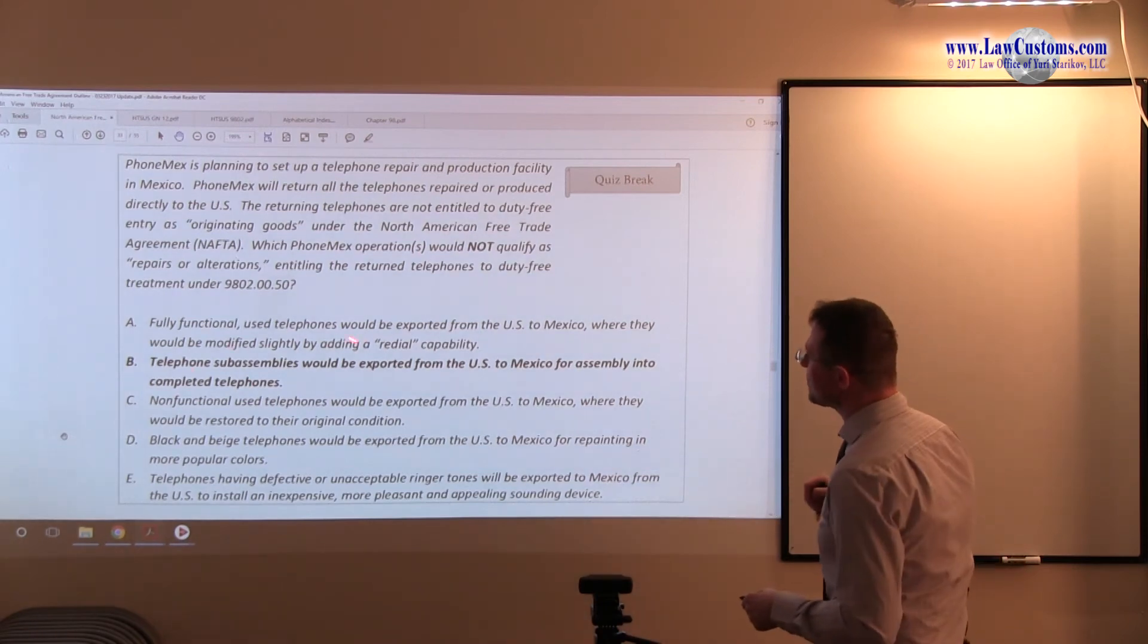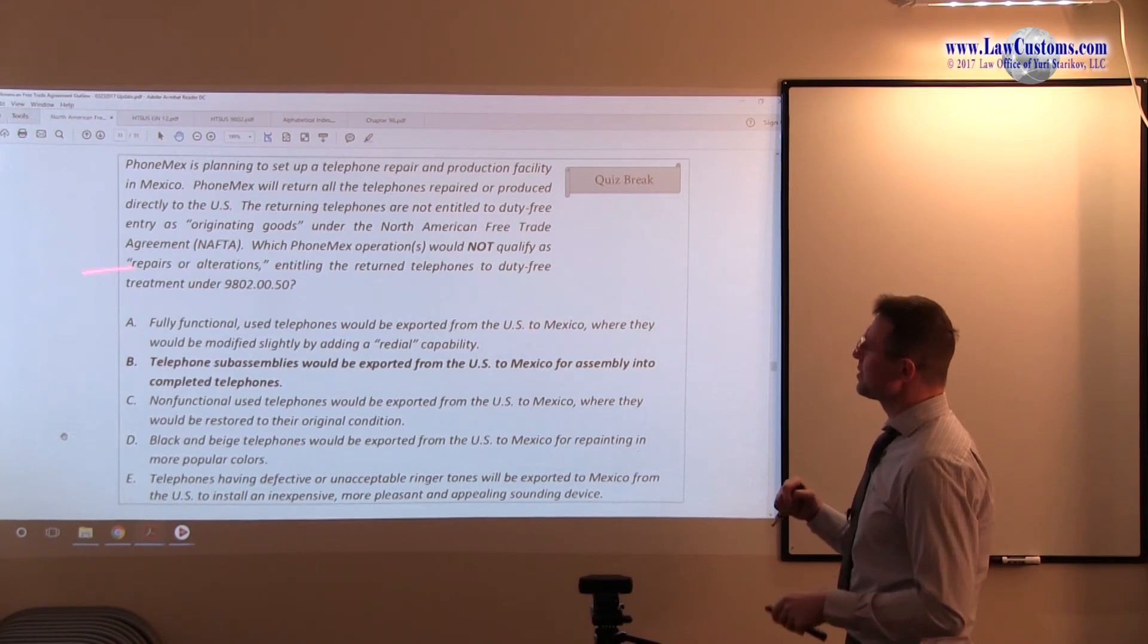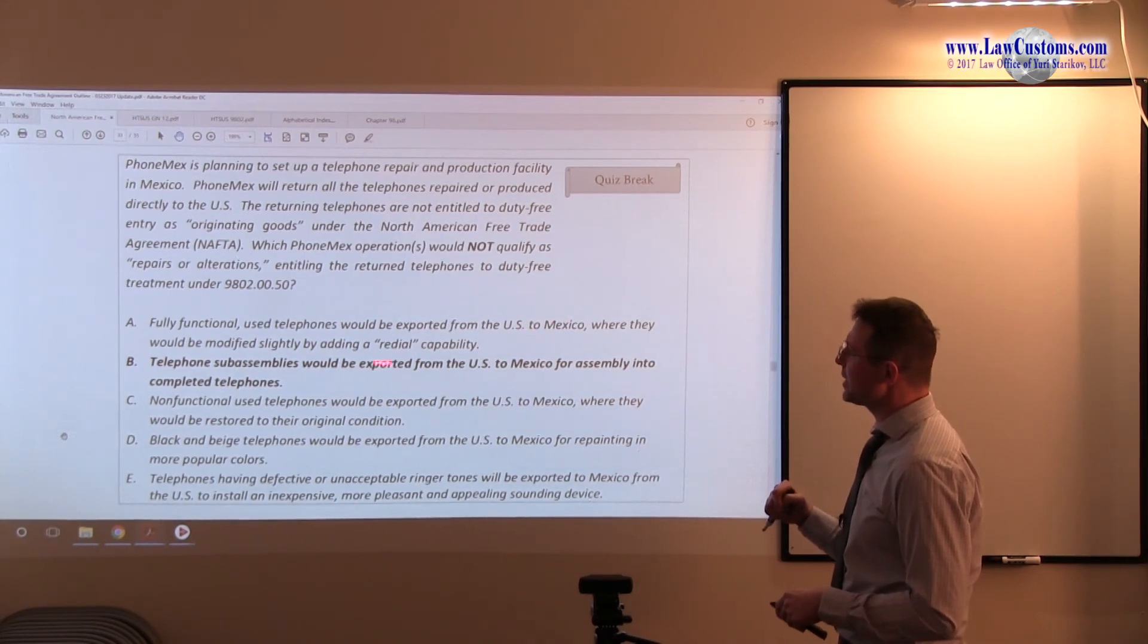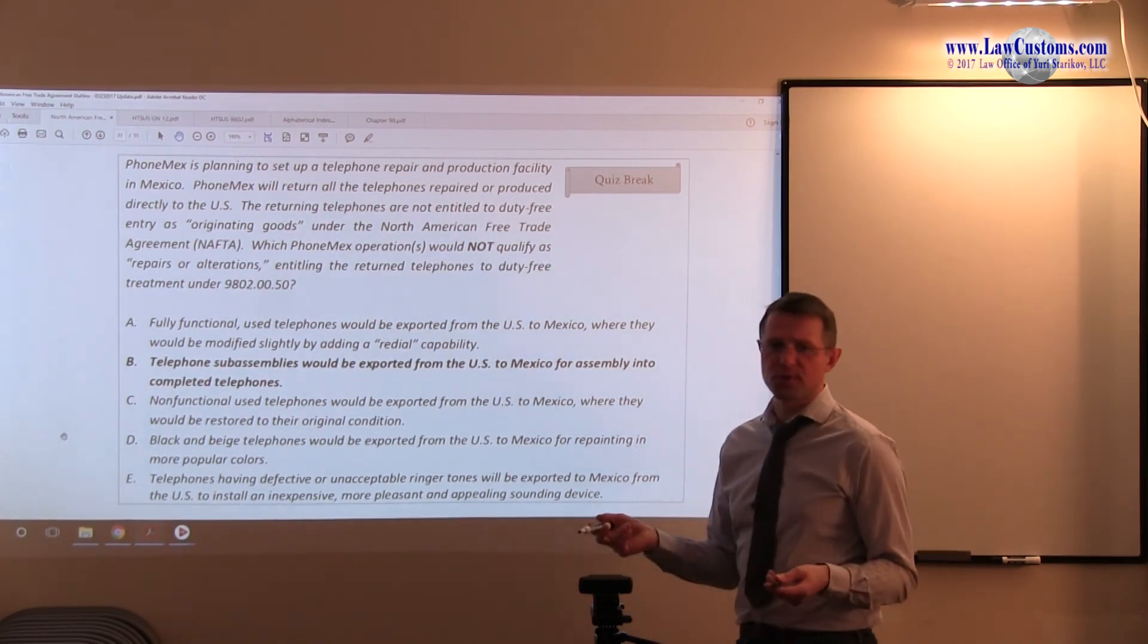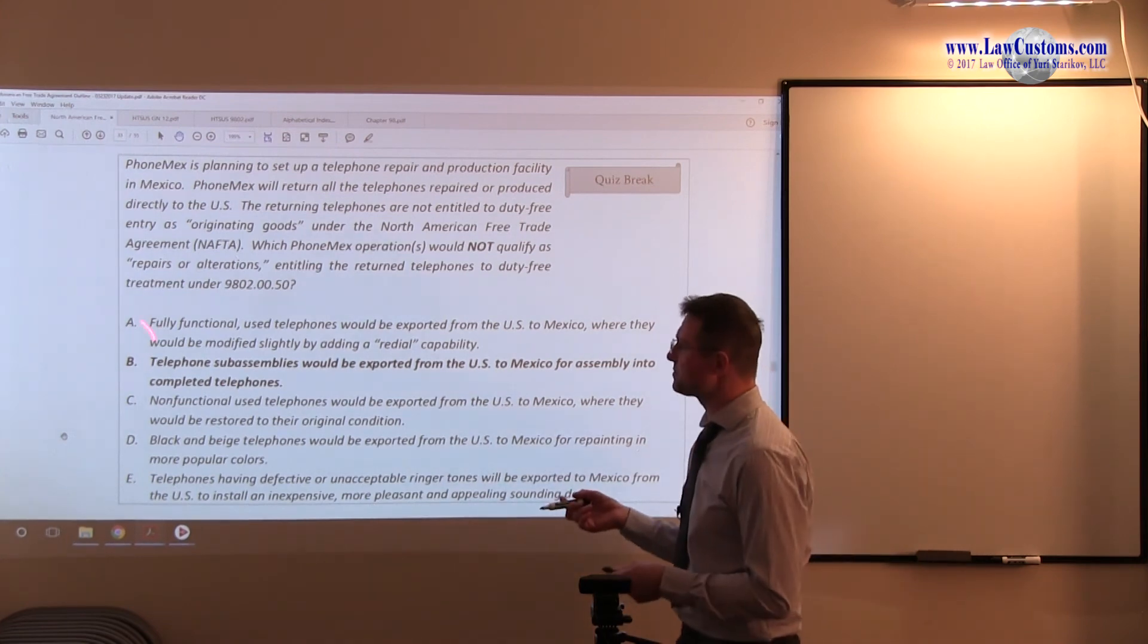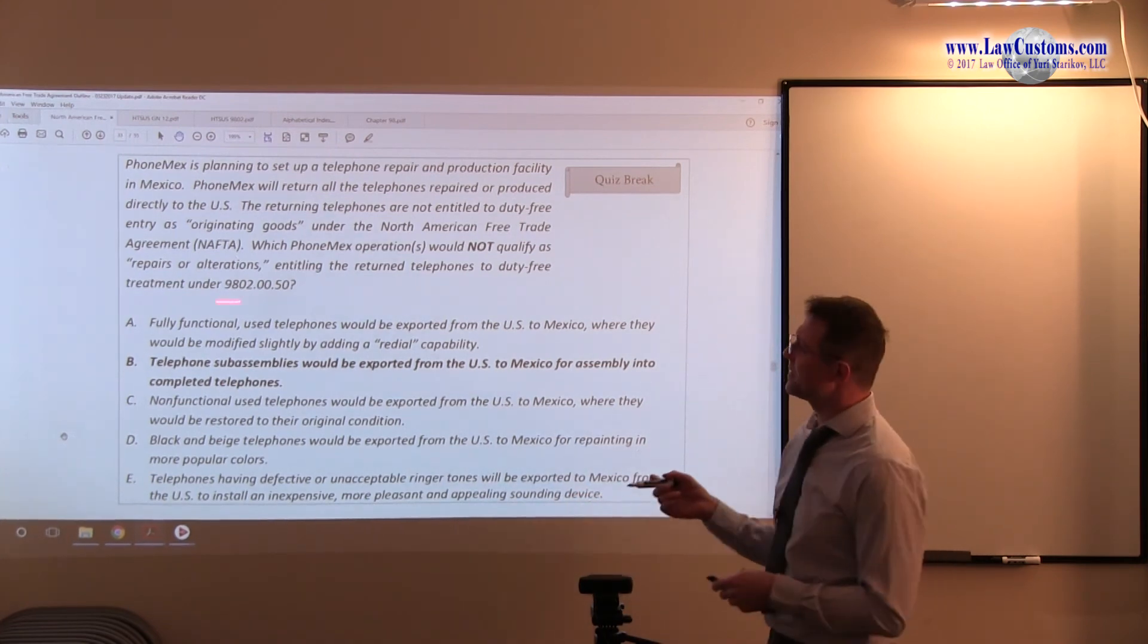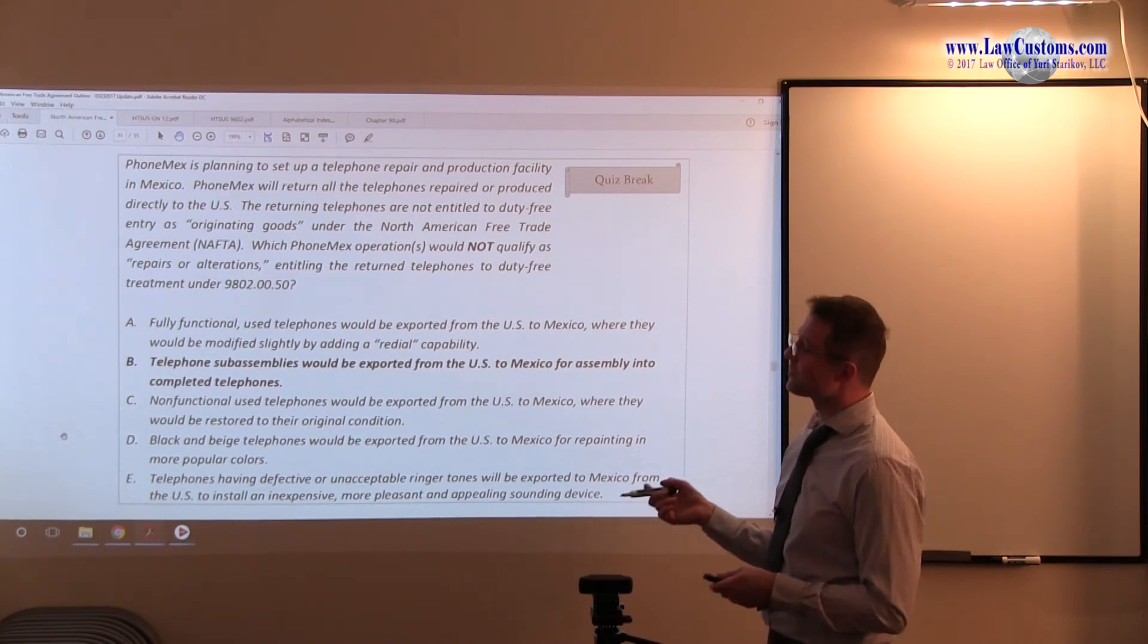And, so, let's start out our analysis from A. Fully functional used telephones would be exported from the United States to Mexico, where they would be modified slightly by adding memory dial capability. All right, so, no new telephone on the merge, only slight modification, no new article of commerce, so this is fine. A fits 9802 criteria, and again, we're looking for the one that's not. So, moving further.